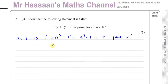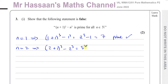When n equals 2, we're going to have (2+1)³ minus 2³, that's 3³ minus 2³, which gives you 27 minus 8, which is 19. And that's also prime.